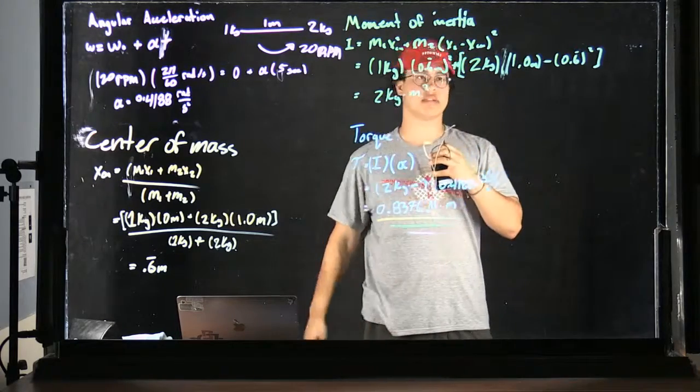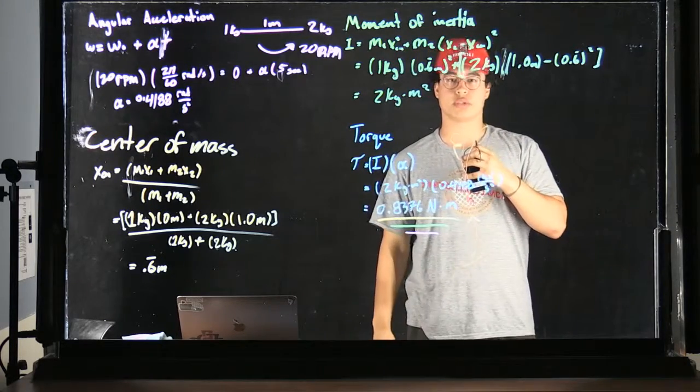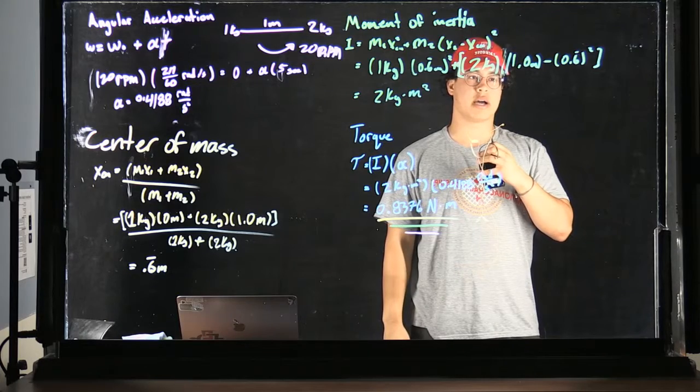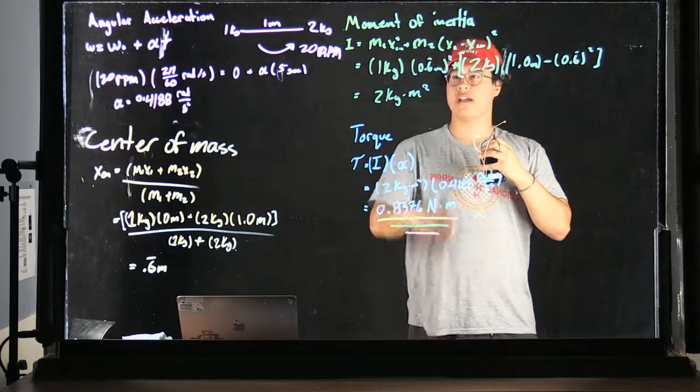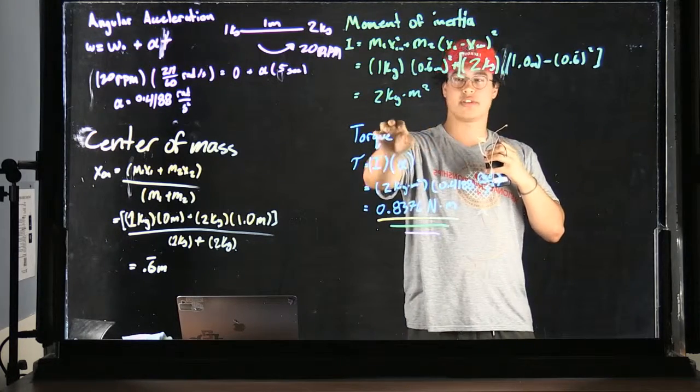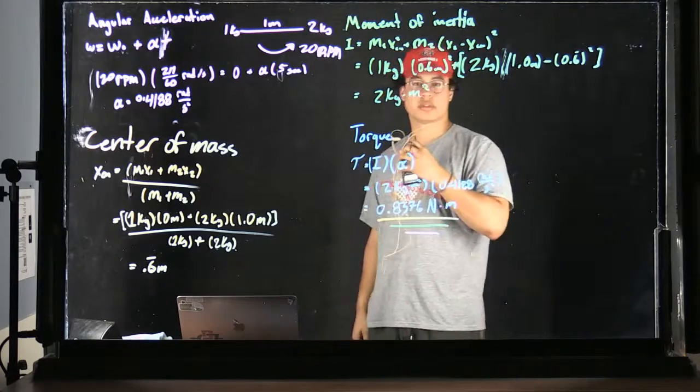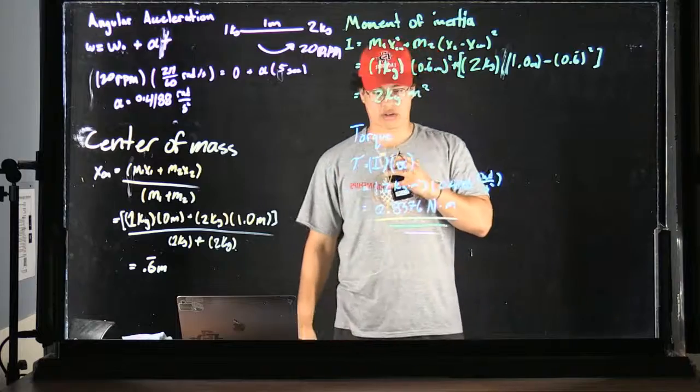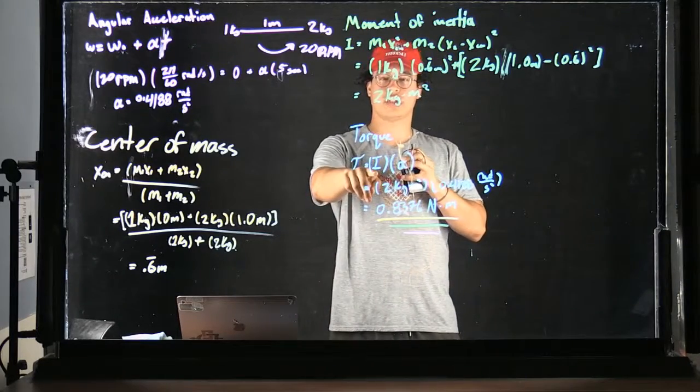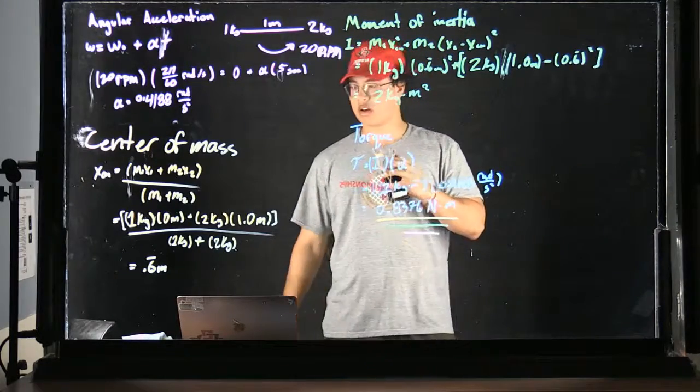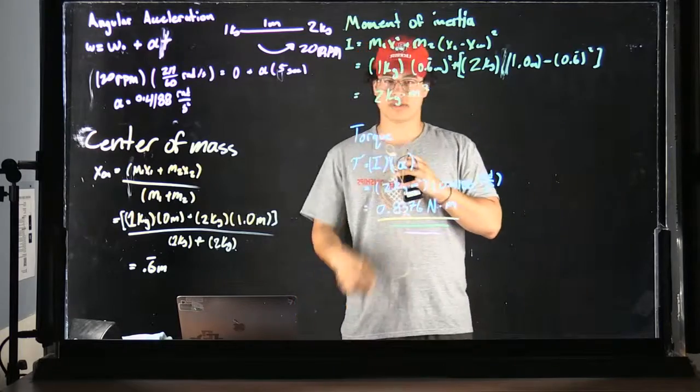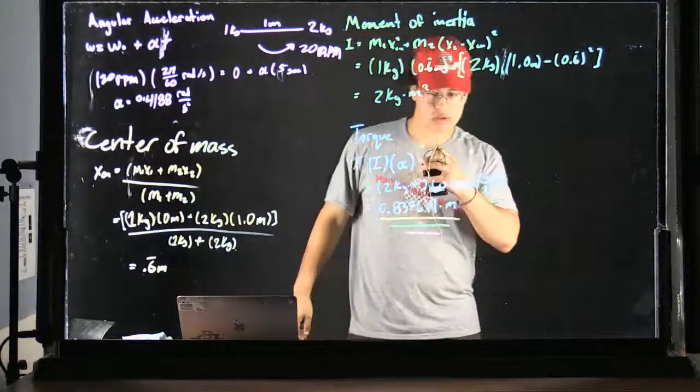And now that we've found all that, I move over to the torque equation, where I show you, once again, that the moment of inertia and the angular acceleration, its products will equal the torque needed to bring these balls to a halt. And afterwards, we've realized that that number is 0.8376 newtons per meter, and I look like a freaking doofus.